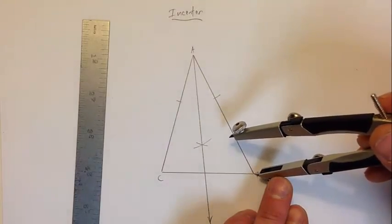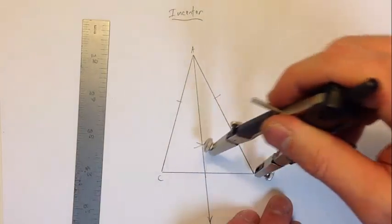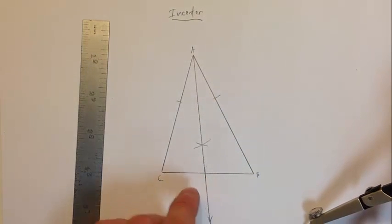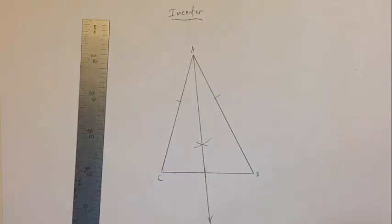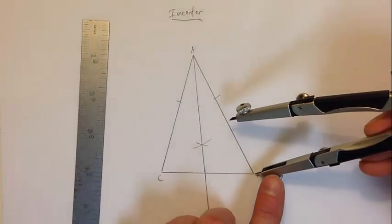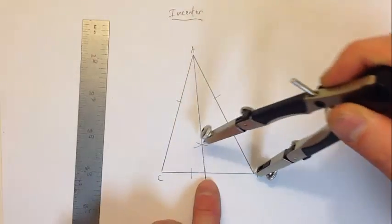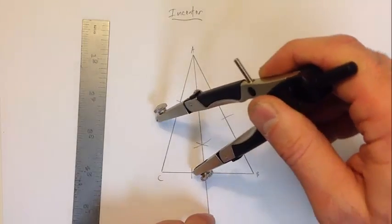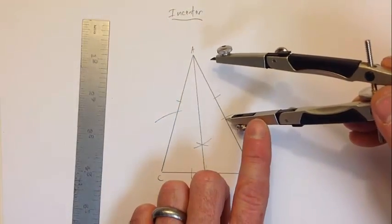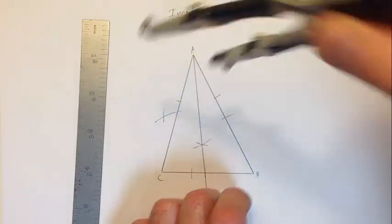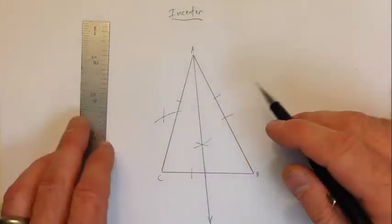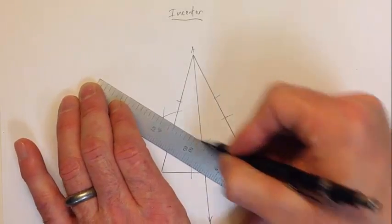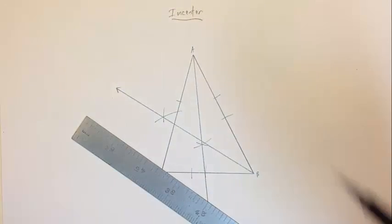Repeat the process at vertex B. I'll open up the compass a little bit to get away from the first bisector line. Find the angle bisector and connect from B through to the intersection of the last two arcs. That's our second angle bisector.